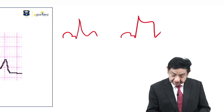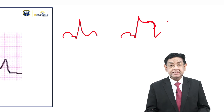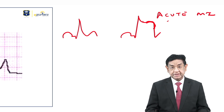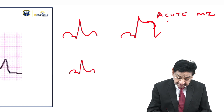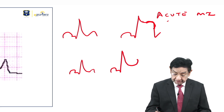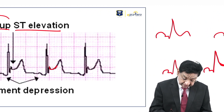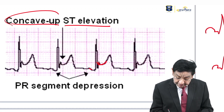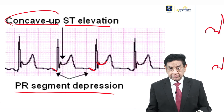This is the ST segment elevation, but there is convexity upward — this is the classical finding you get in acute myocardial infarction. Now look into the finding you get in acute pericarditis: there is ST elevation, but the concavity is upward — like here, convexity upward in MI, and concavity upward in pericarditis. That's the point you have to remember. In addition to that, there is depression of the PR segment also. PR segment depression is a classical finding in acute pericarditis. This is a very important point you should know.